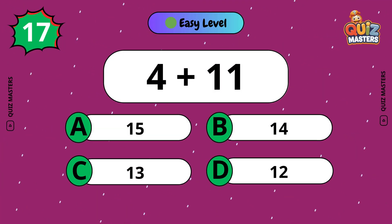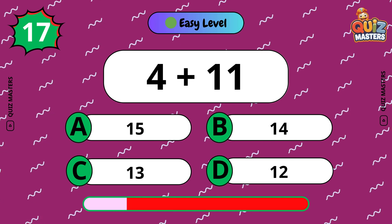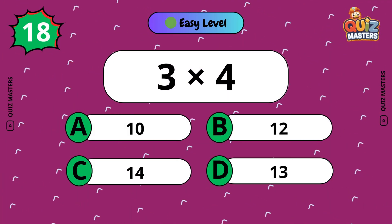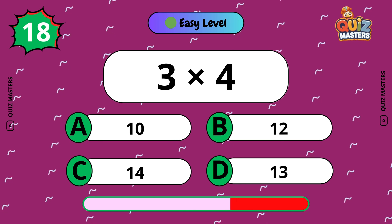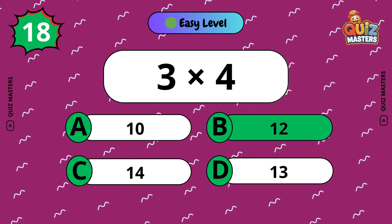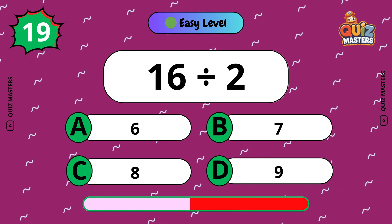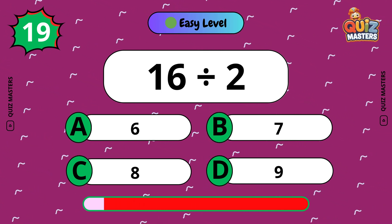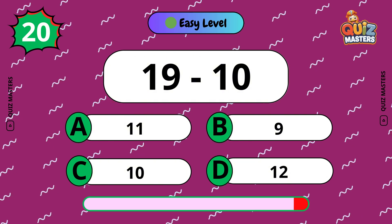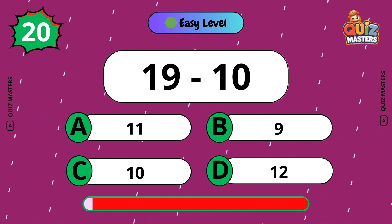4 plus 11: 15. 3 by 4: 12. 16 divided by 2: 8. 19 to 10: 9.